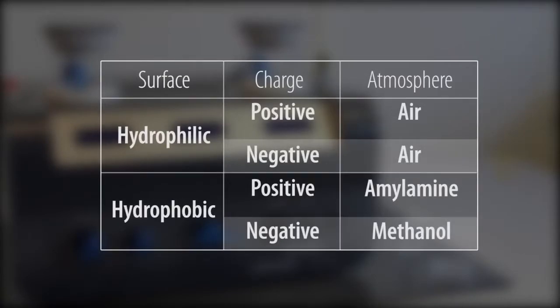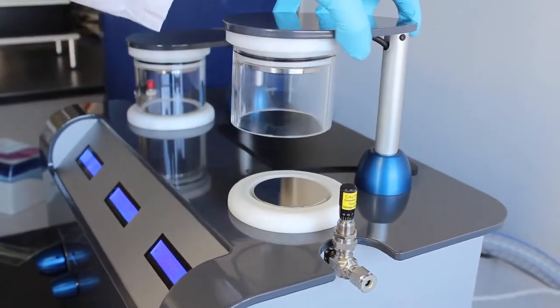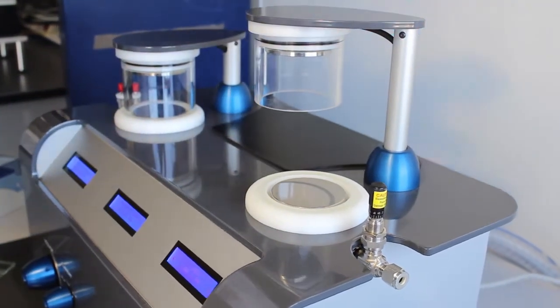With ELMO, make your support films or grids hydrophobic or hydrophilic with either negative or positive charge. ELMO is easy to use, reliable, compact and affordable.